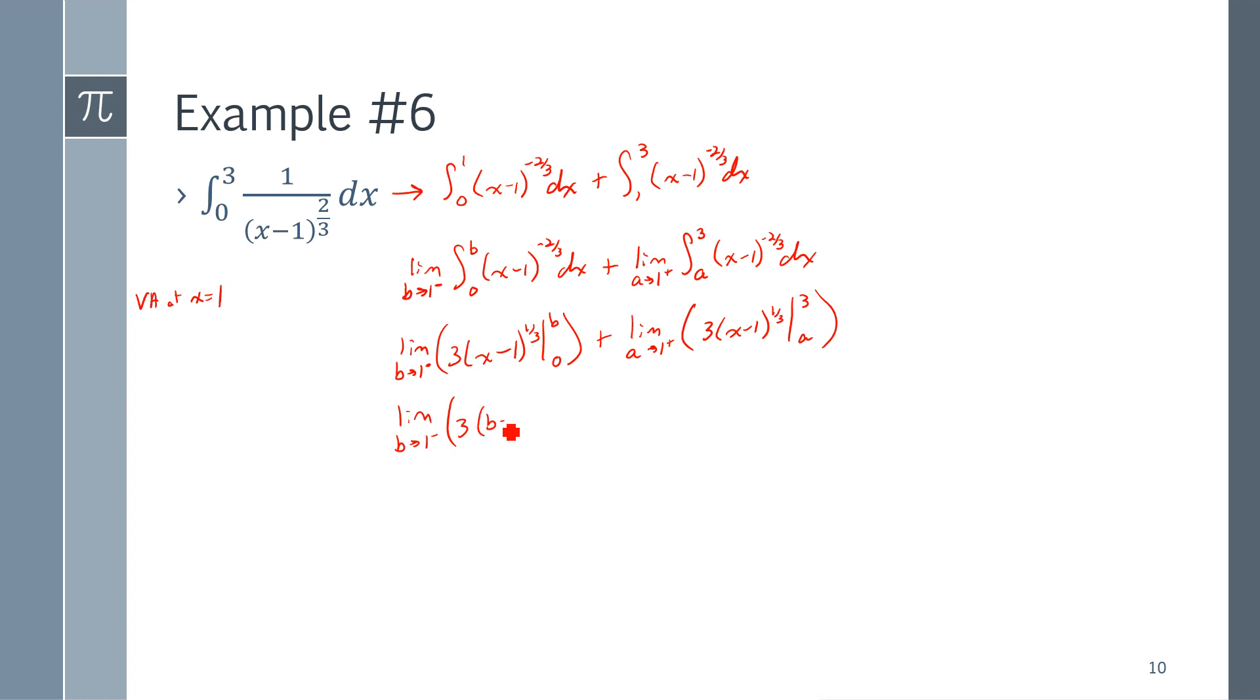3 times B minus 1 to the 1 third. And then, plugging in a 0 gives me a negative 3. And on my other integral, I already said I'm going to get a negative 3.